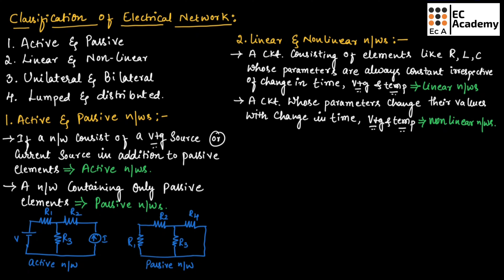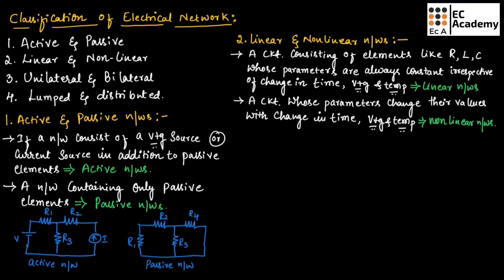So if in a circuit the parameters are always constant irrespective of change in time, voltage, and temperature, it is known as a linear network. If the parameters of the circuit change with respect to time, voltage, and temperature, such type of networks are known as non-linear networks.